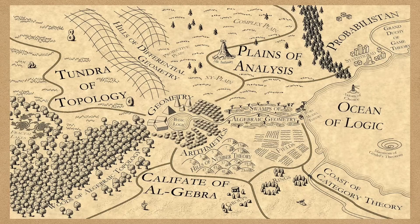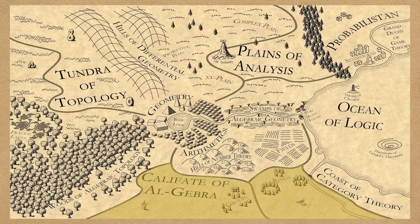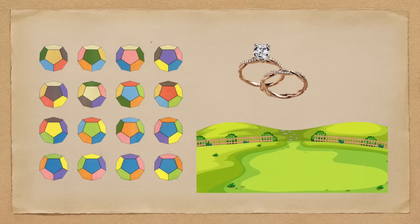Mathematics, as we know it, can be broadly divided into a few areas based on what they study. Algebra studies algebraic structures, such as groups, rings, and fields,